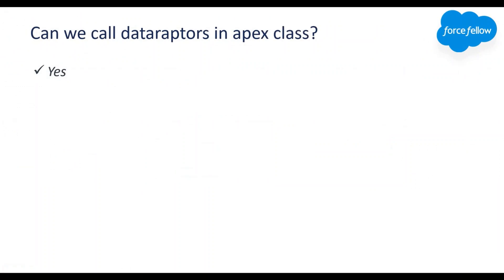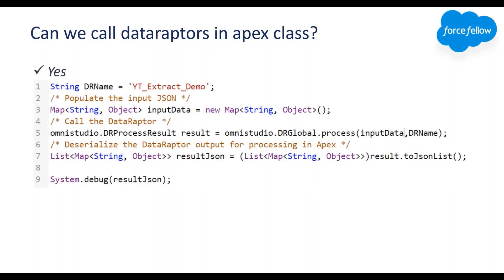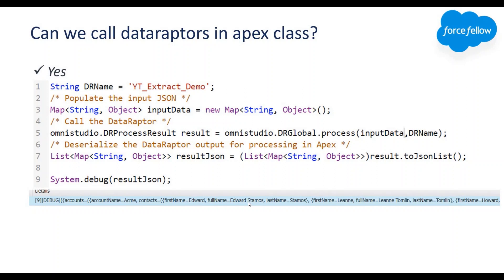Next question: can we call a Data Raptor in an Apex class? The answer is yes. We can call any kind of Data Raptor in an Apex class — Load, Extract, Turbo Extract, and Transform. Here is an example: I have stored my Data Raptor name in a string variable, and using the DRGlobal.process() method we can provide input parameters and the Data Raptor name. It will automatically call our Data Raptor and return a DR process result as output. I am converting that response into JSON and printing it in the debug log, which shows accounts, account details, and contacts.